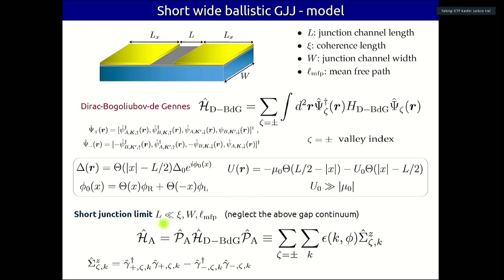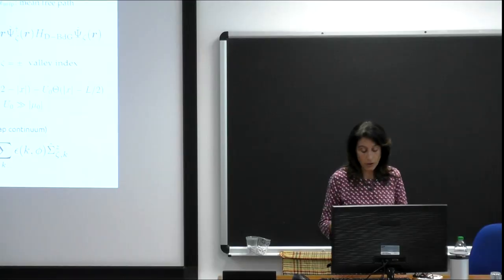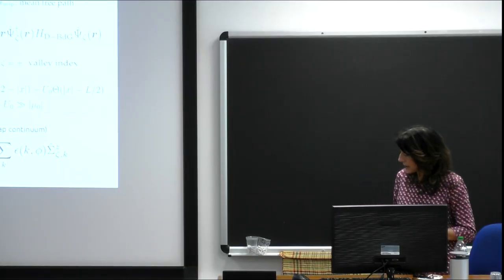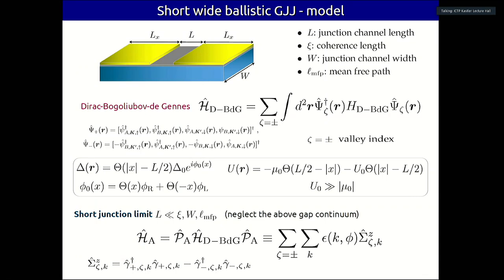In the short junction limit, we have a series of discrete Andreev bound states and a continuum. In this regime, the continuum does not depend on the phase difference, so continuum states do not carry supercurrent. We are only interested in the Andreev bound states, which carry supercurrent. We write the effective Hamiltonian of the Andreev bound states in a simple form, with the Andreev levels indexed by valley index z and transverse momentum k.